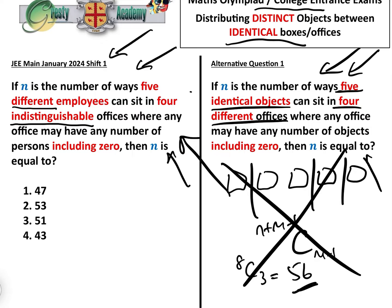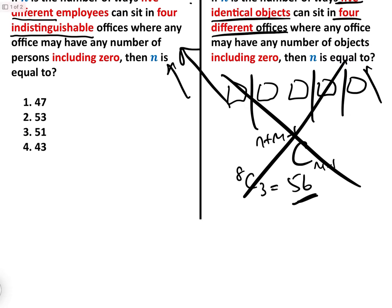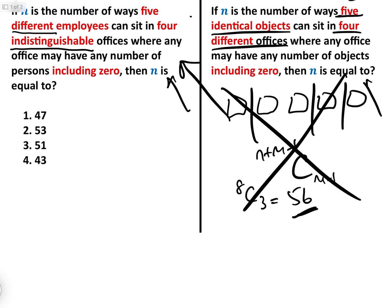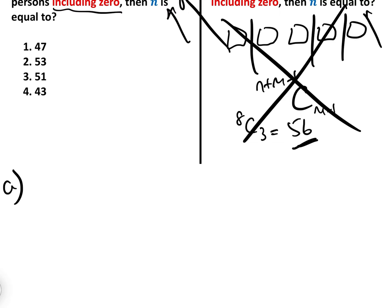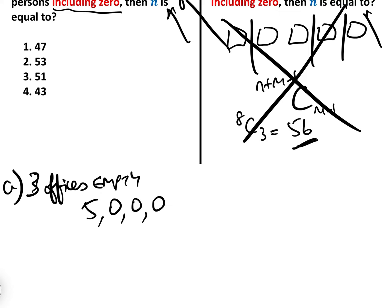The correct way to answer this question is to use partitioning of distinct people into identical offices. We have to list the cases. We have five different employees sitting in four indistinguishable offices where there may be zero people in any of the offices. Case A: if three of the offices are empty, then basically we have five employees in one office and zero in the others. There is only one way of doing that.